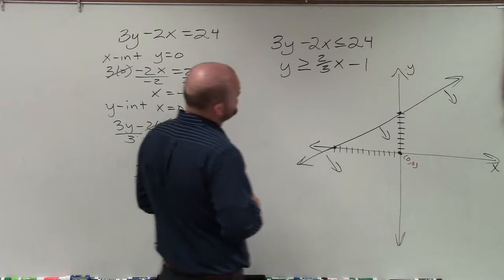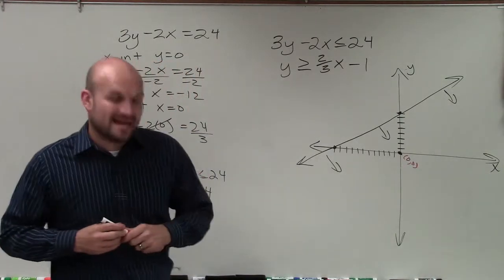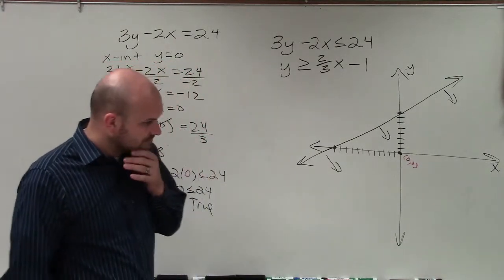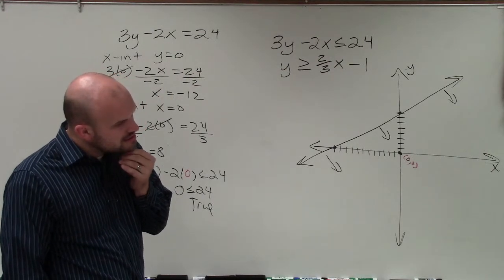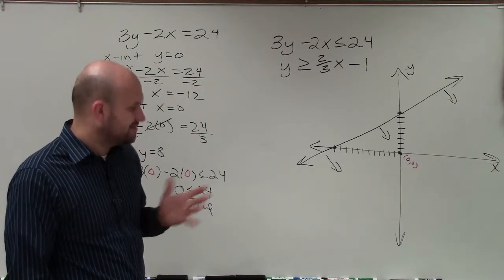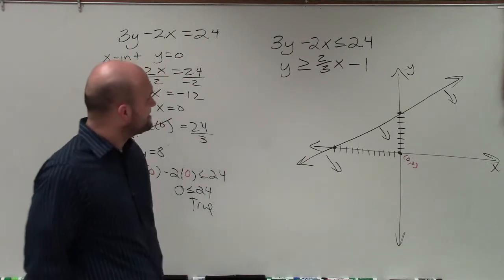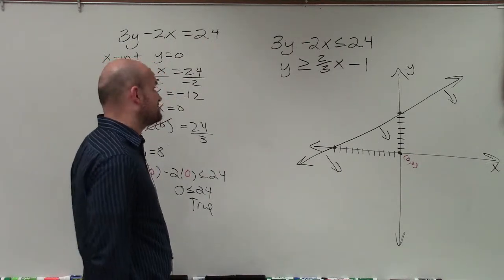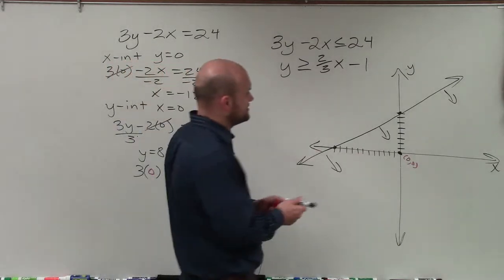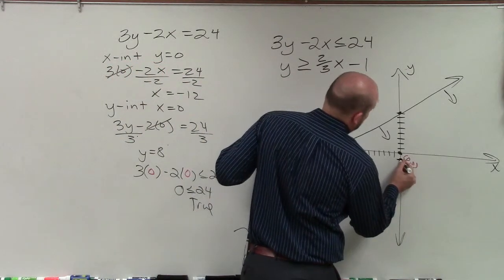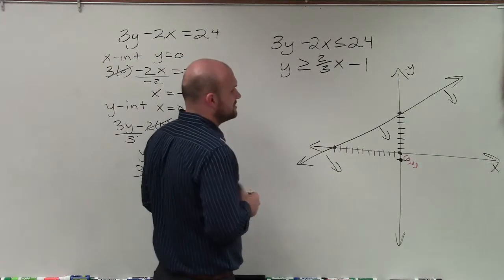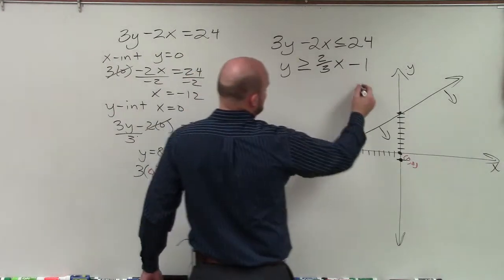The next thing I have y is greater or equal to 2 thirds x minus 1. When I have y is greater or equal to 2 thirds x minus 1, that line is going to be down to negative 1.